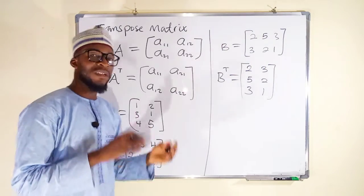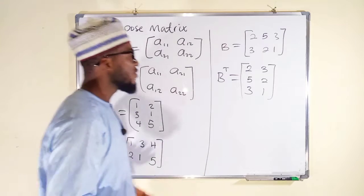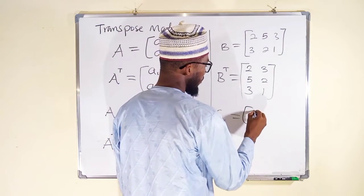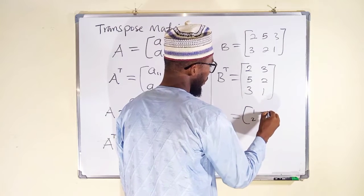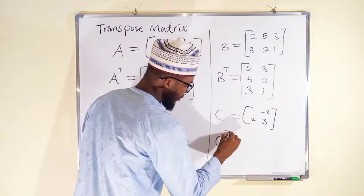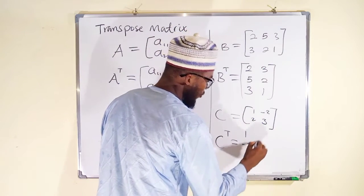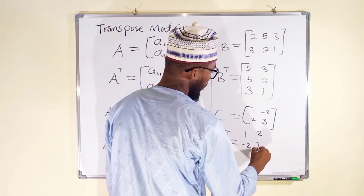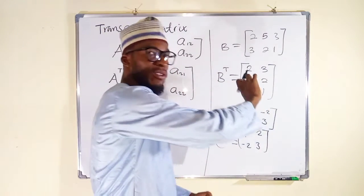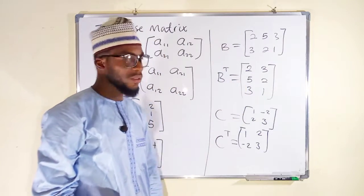This is exactly how to convert a matrix into its transpose. Even for a 2 by 2 matrix — suppose we have a matrix C with entries 1, 2, 2, 2, and 3 — just take the rows of the first matrix and assign them as the columns of the other matrix.